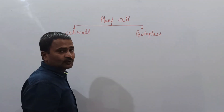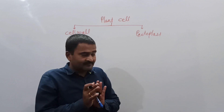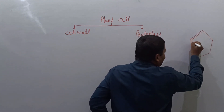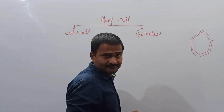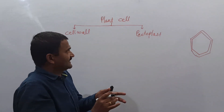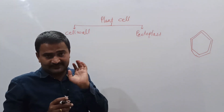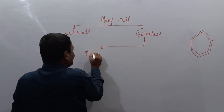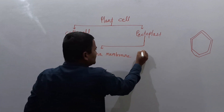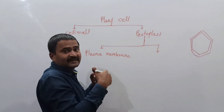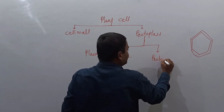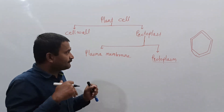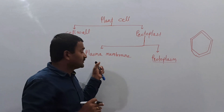The cell cytoplasm includes the cell membrane plus the inner material. This is called the protoplasm. Now within the protoplast — if we remove the plasma membrane, whatever complete content remains, that is called the protoplasm. So protoplast and protoplasm are not the same terms. Protoplast is with the plasma membrane, but protoplasm is without the plasma membrane.